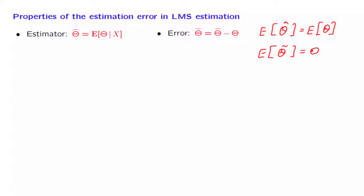In fact, something stronger is true. Not just the overall average of the estimation error is 0, but even if you condition on a particular measurement, still the conditional expectation of your estimation error is going to be equal to 0.